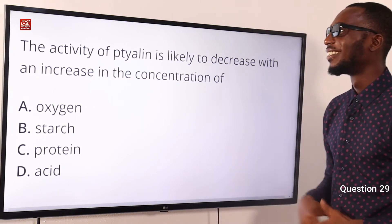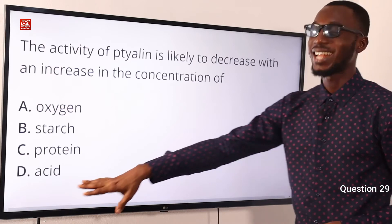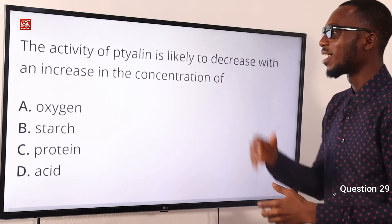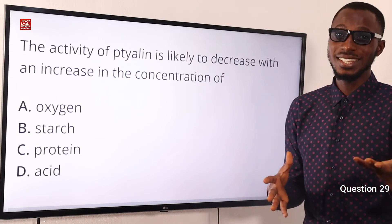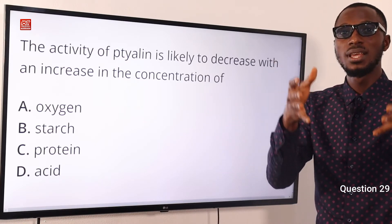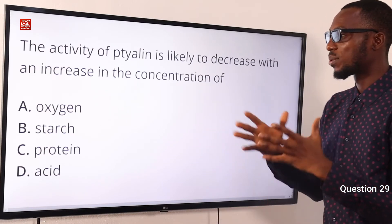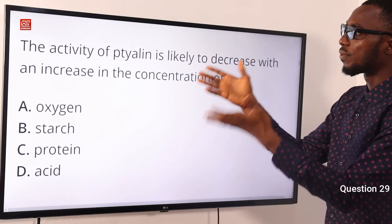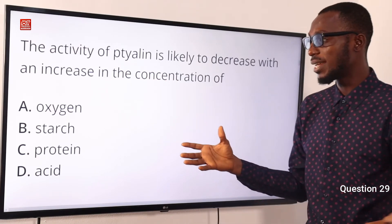Question 29. The activity of ptyalin is likely to decrease with an increase in the concentration of what? That is the concentration of acid. Ptyalin is found in the mouth in the saliva and helps in digestion of certain food substances. By the time this food moves into the stomach, there is a very high concentration of acid — so acidic it can melt a razor blade. Enzymes operate within a specific pH, so once you alter the pH, the activity gets interrupted. The introduction of acid causes a decrease in the activity of ptyalin. Option D is correct.